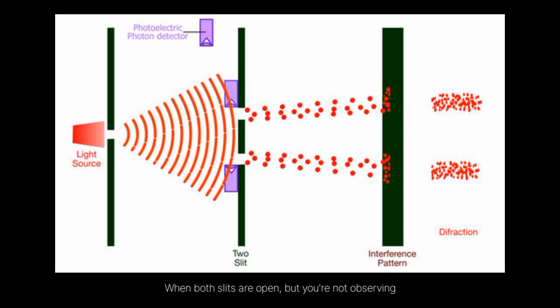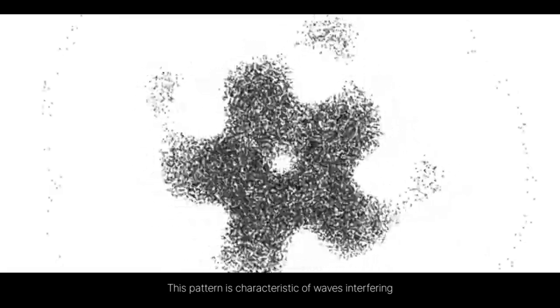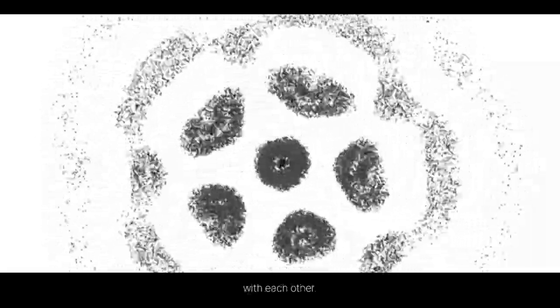When both slits are open, but you're not observing which slit the particle goes through, an interference pattern emerges on the screen. Instead of two bands, you see several bands of high and low intensity, known as interference pattern. This pattern is characteristic of waves interfering with each other.